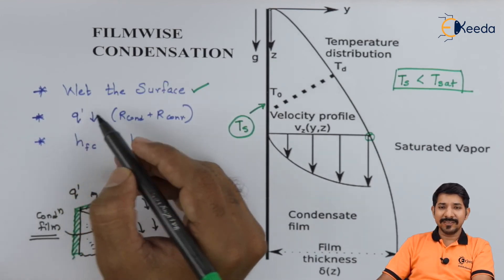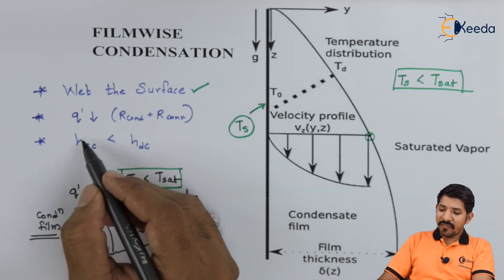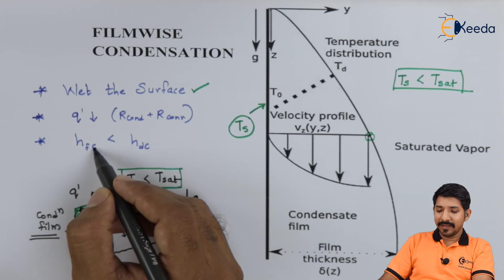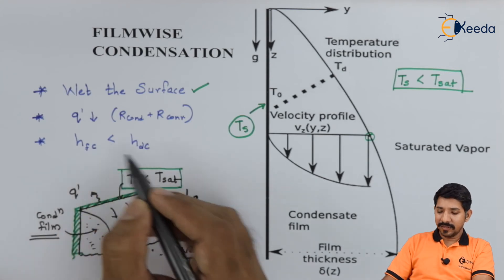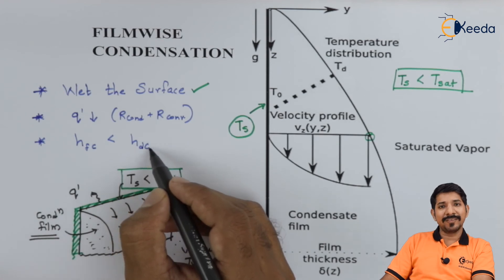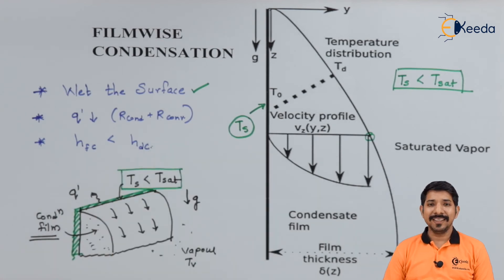We can conclude that the value of h, the heat transfer coefficient in case of film condensation, is less than the heat transfer coefficient in case of dropwise condensation. That is it for this topic.